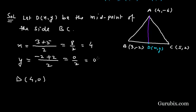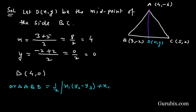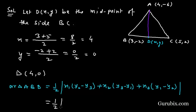Now we shall find the area of triangle ABD using the formula: Area = (1/2) |x₁(y₂ - y₃) + x₂(y₃ - y₁) + x₃(y₁ - y₂)|. For triangle ABD, the coordinates are A(4, -6), B(3, -2), and D(4, 0). So x₁ = 4, y₁ = -6; x₂ = 3, y₂ = -2; x₃ = 4, y₃ = 0.